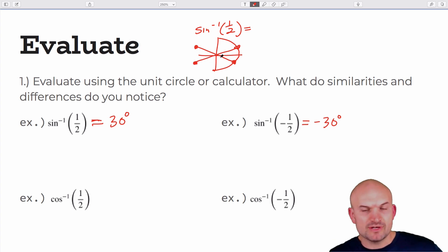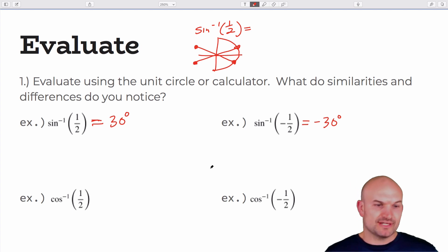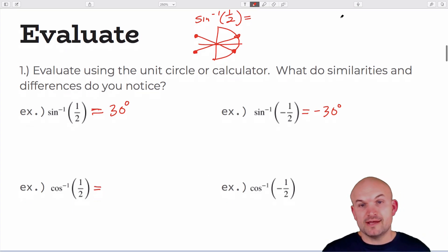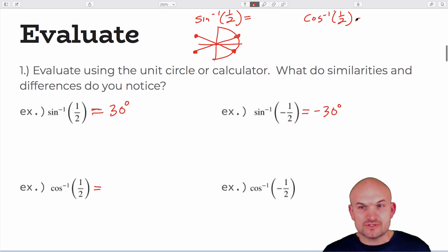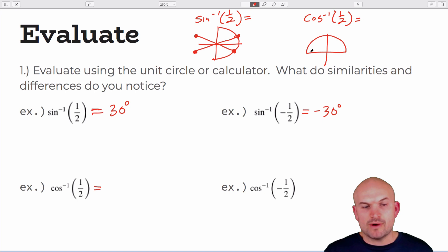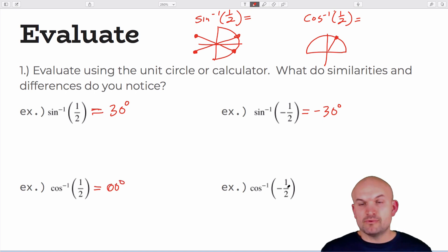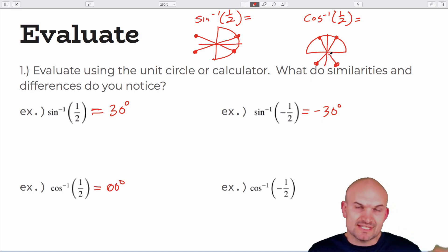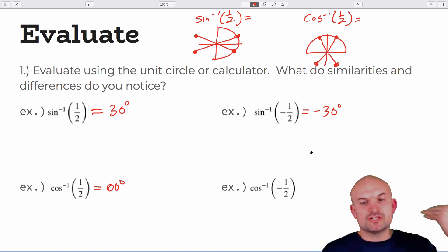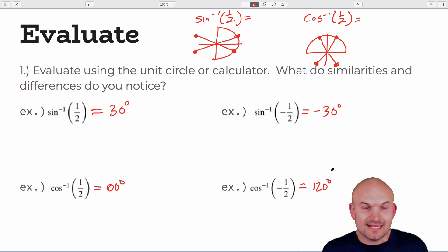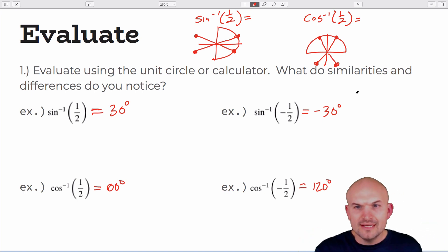Cosine has a different restriction. cos⁻¹(1/2) asks: cosine of what angle equals one half? Cosine is restricted between the first and second quadrants. Cosine equals one half at 60 degrees. And cos⁻¹(-1/2) gives 120 degrees. Other angles where cosine equals those values exist but don't meet the restriction — there's only one answer, and your calculator will only give you one answer.